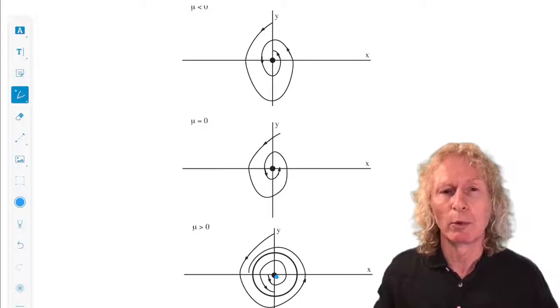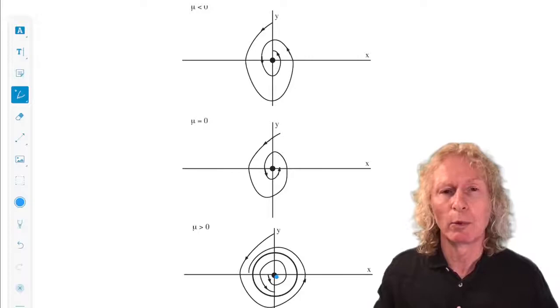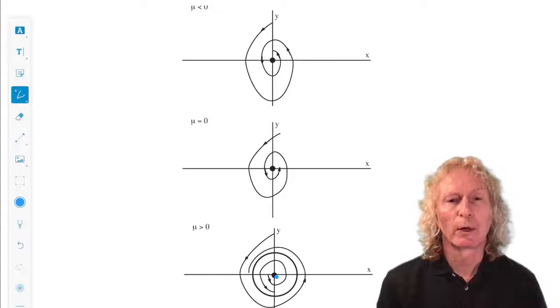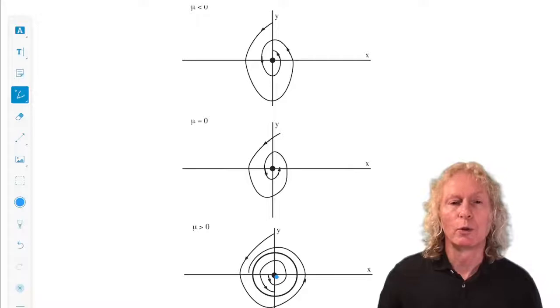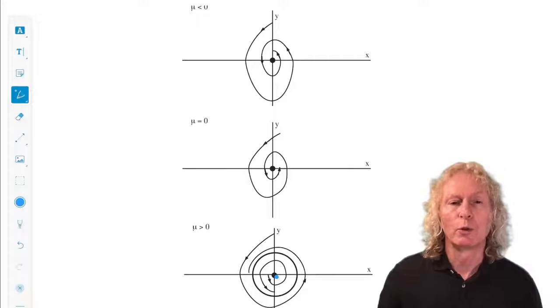But for now, you have an equilibrium point in two-dimensional, autonomous. If you linearize about it, and the eigenvalues are plus or minus i omega, omega non-zero. Okay, that's a necessary condition.